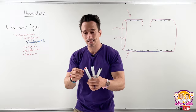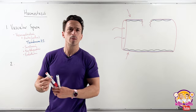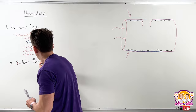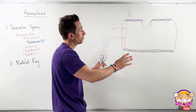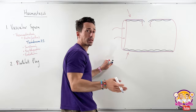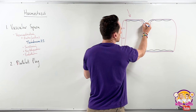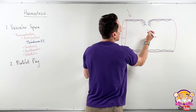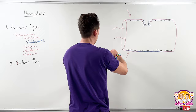The second step is the platelet plug. Once you've damaged the blood vessel, you've damaged the endothelial cells and exposed the underlying connective tissue — the basement membrane. This tissue is made up of a lot of collagen. Now, collagen is negatively charged, and you've got all of this negatively charged collagen exposed. Apart from being negatively charged, collagen is also sticky.